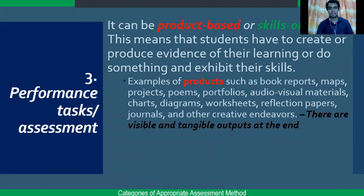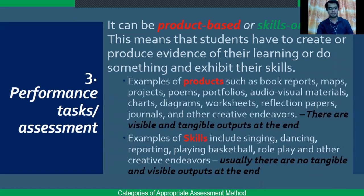Performance tasks can be product-based or skills-oriented. Examples of products include book reports, maps, projects, poems, portfolios, audiovisual materials, charts, diagrams, worksheets, reflection papers, journals, and other creative endeavors — there are visible and tangible outputs at the end of the activity. Examples of skills include singing, dancing, reporting, playing basketball, role-play, and other creative endeavors — usually there are no tangible and visible outputs after the activity.